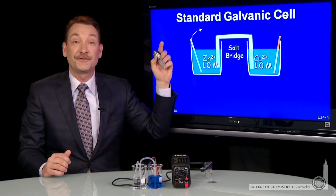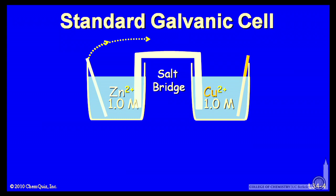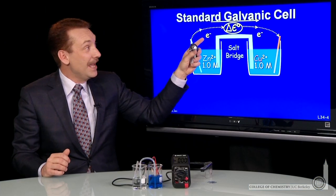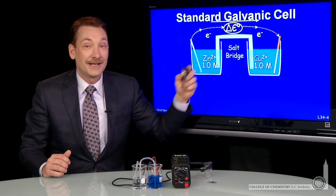As it occurs, electrons flow from the zinc metal, and this is through a little wire now, down to the copper metal. The overall electron flow is from left to right here, and a wire connects the two.